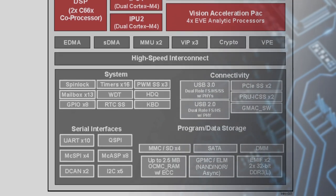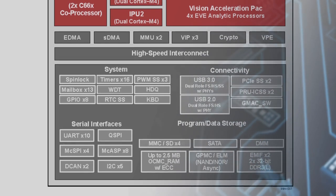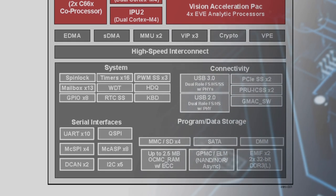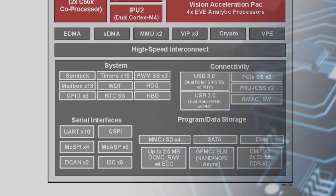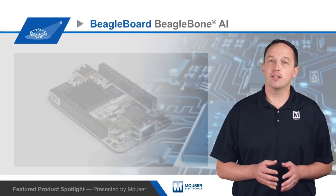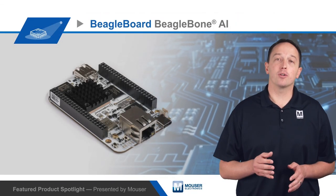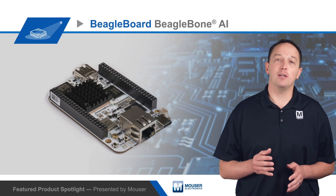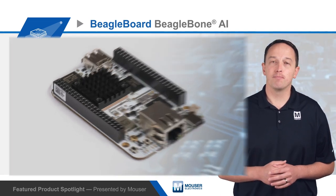The AM5729 also has a dual-core 3D GPU, a 2D graphics accelerator, and hardware to encode and decode 4K H.264 video at 15 frames per second and other codecs up to 1080p at 60 frames per second.